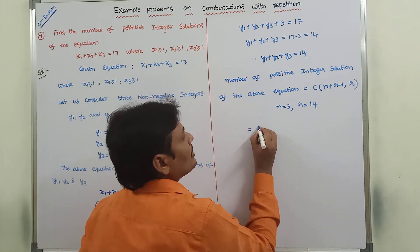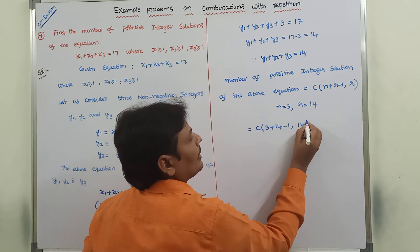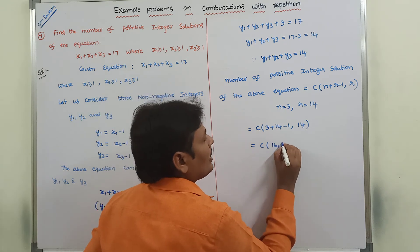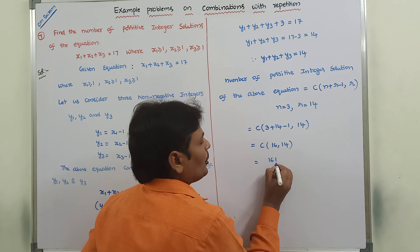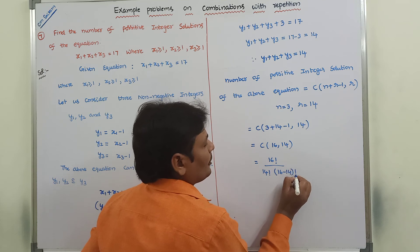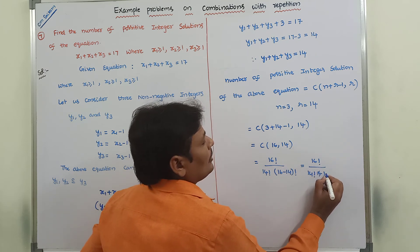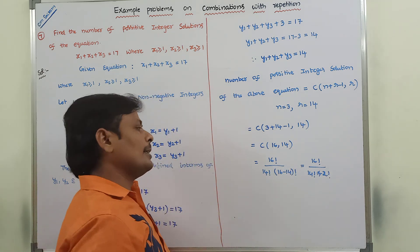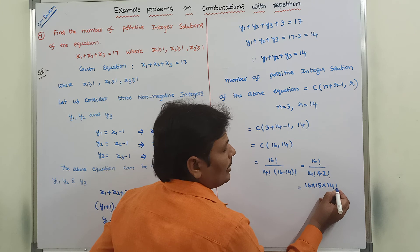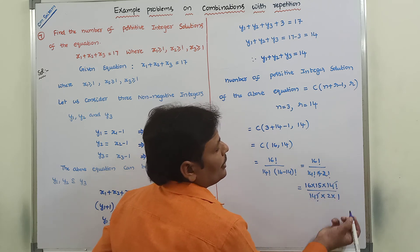Substituting these values: C of n=3, so 3 plus r=14, minus 1, comma 14, that is equal to C(17 minus 1, 14) which is C(16, 14). This equals 16 factorial divided by 14 factorial times 2 factorial, which can be written as 16 times 15 times 14 factorial, divided by 14 factorial — which cancels — times 2 factorial, written as 2 times 1.